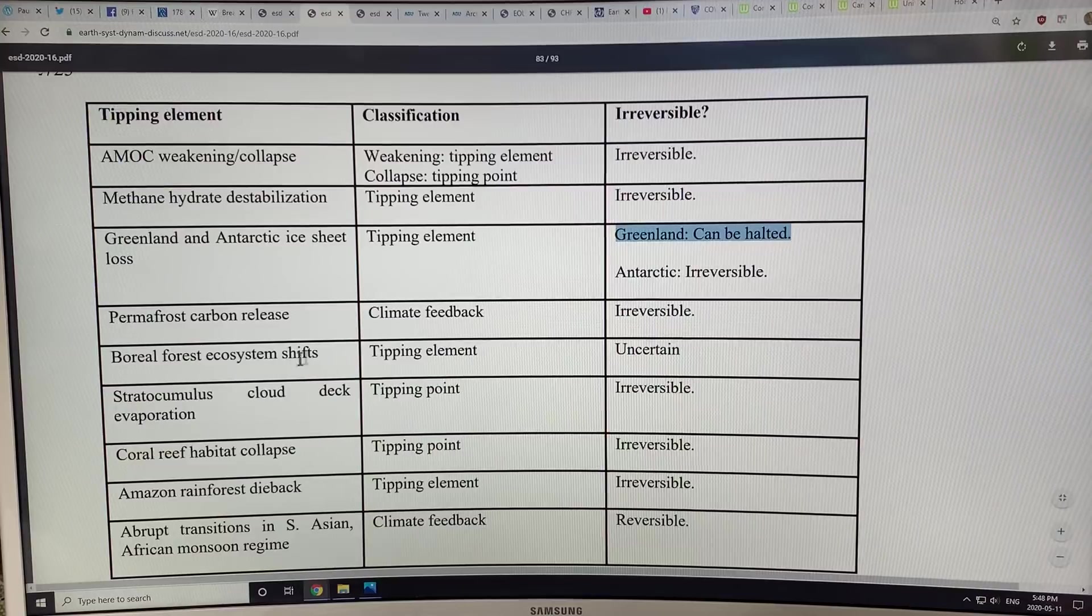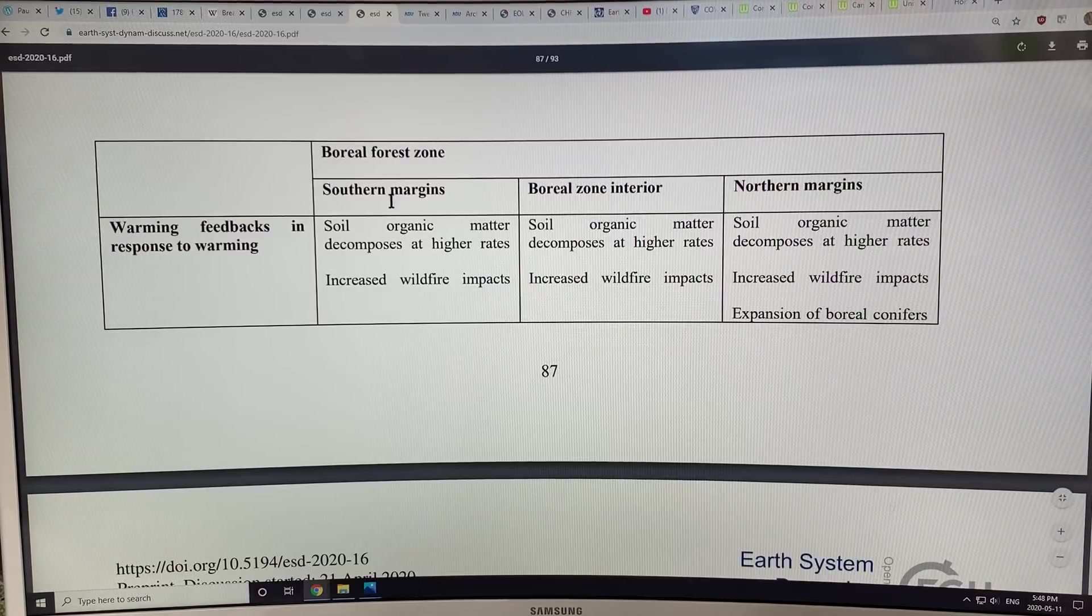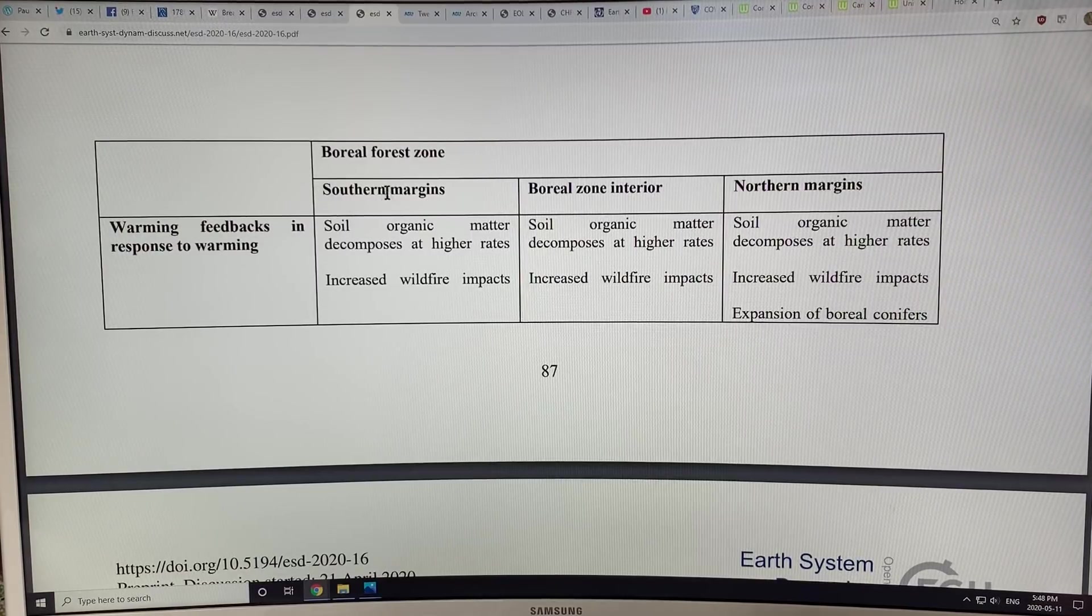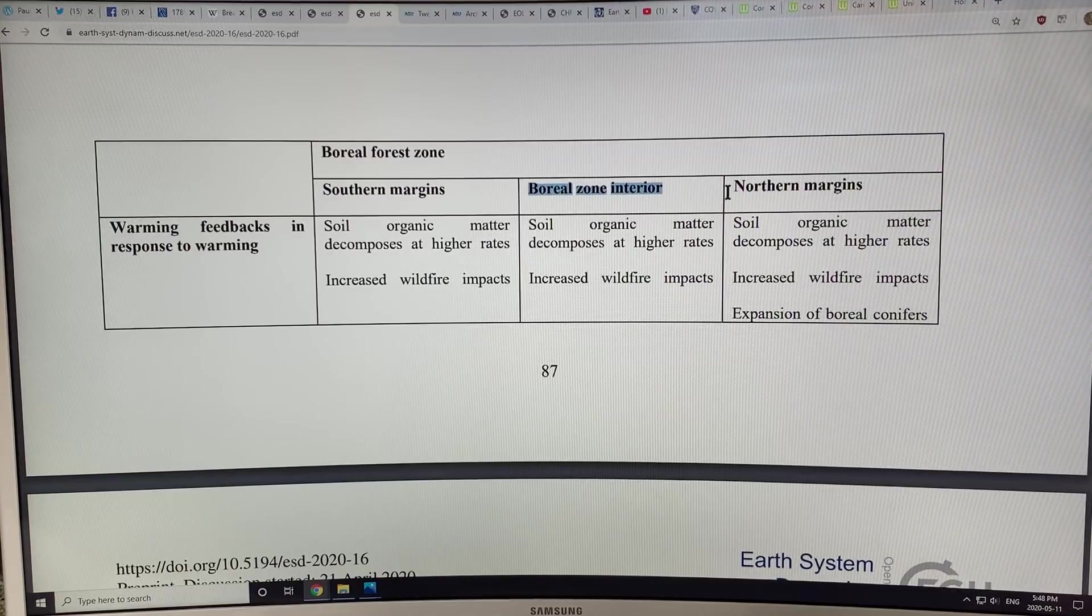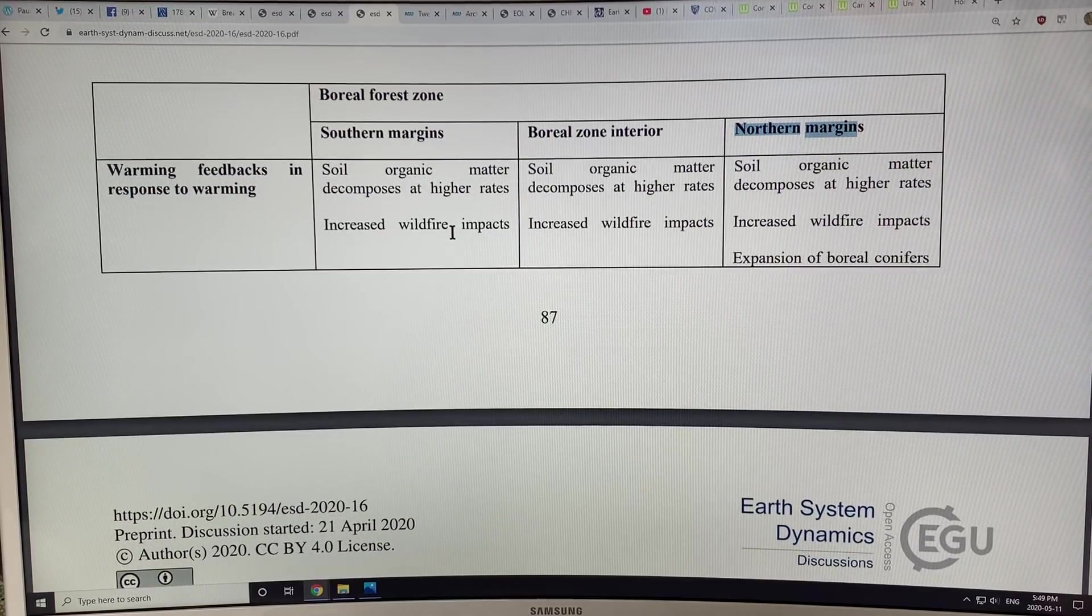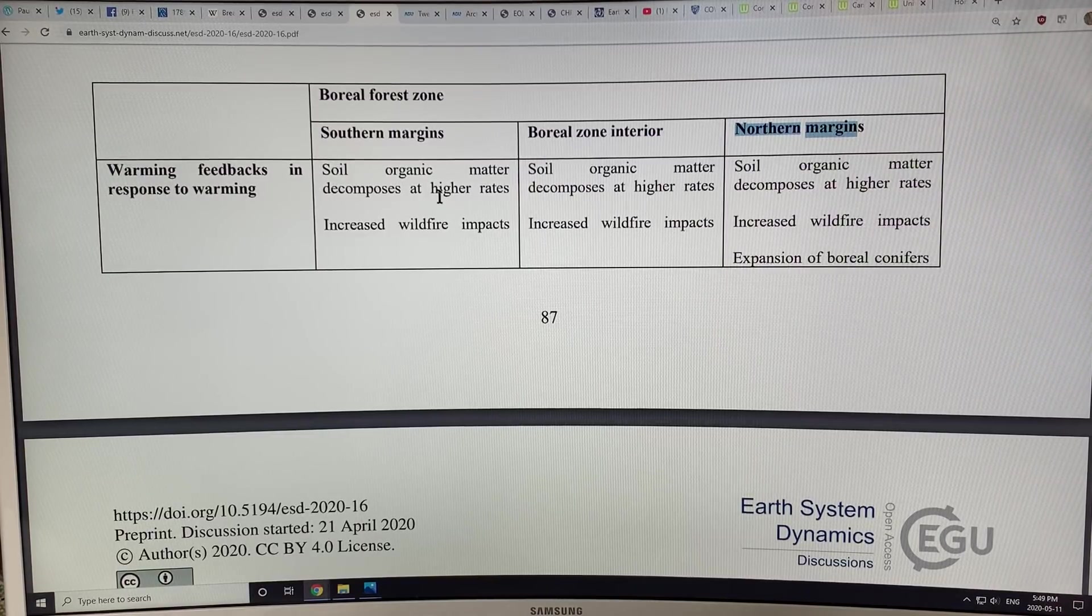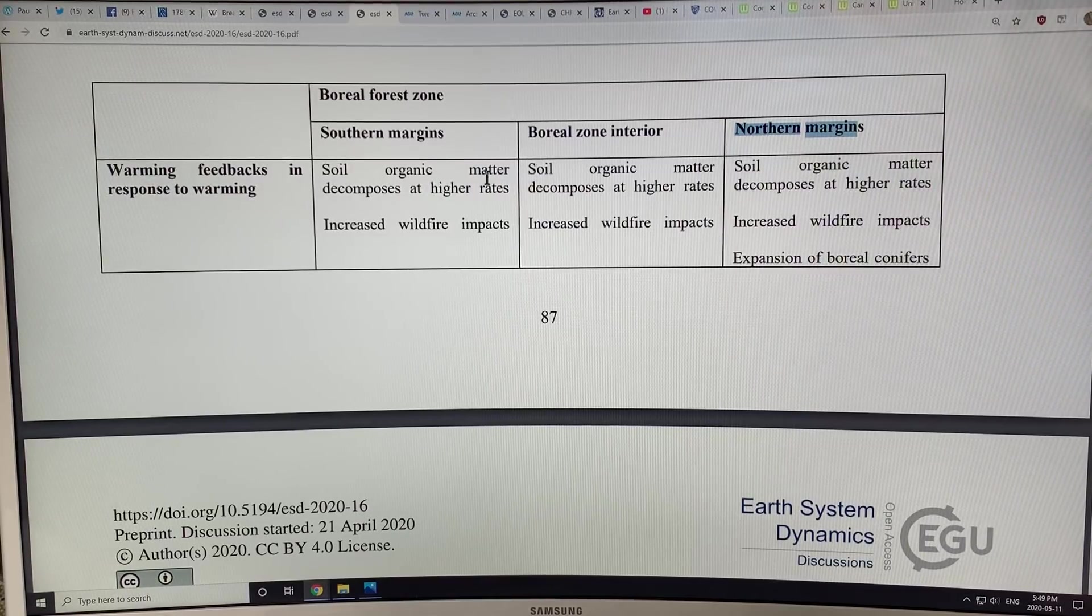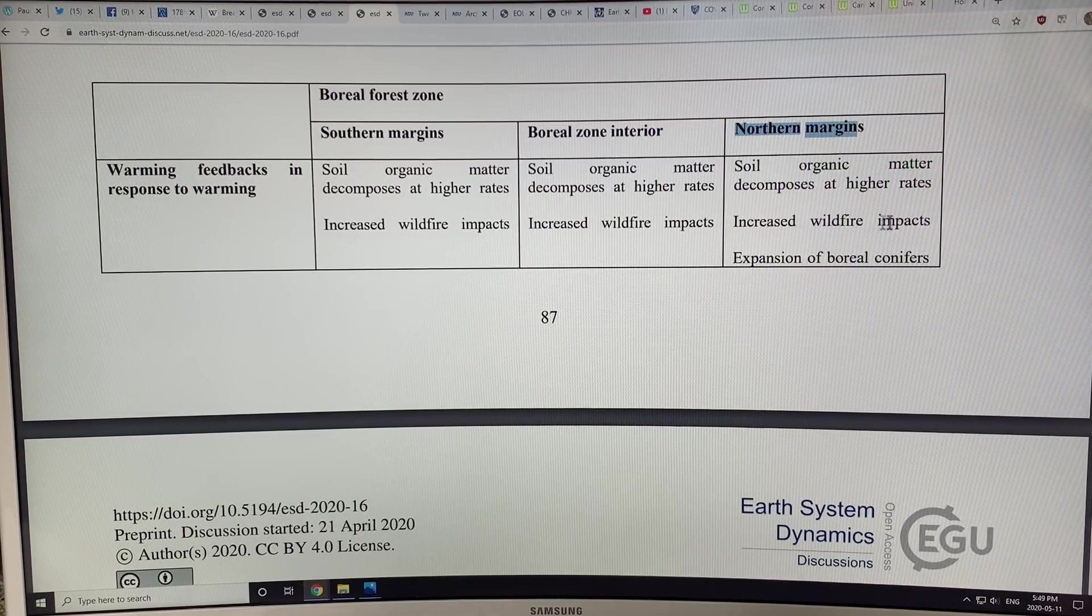Then we get boreal forest ecosystem shifts. The boreal forest—these are the huge northern forests that cover Canada and Siberia. In the southern margins, the interior, and the northern margins, the organic matter is decomposing at higher rates because it's warmer and it's being exposed. When you thaw it out, you get microbial decomposition of the organic matter. The warmer it is, the higher the rates. You get more wildfires in all of these areas.